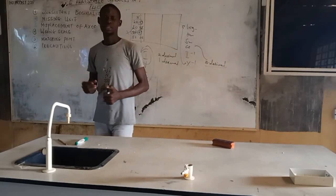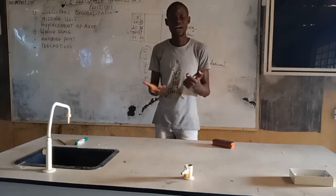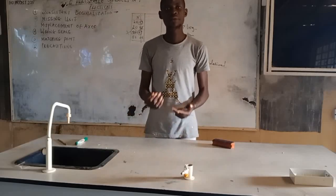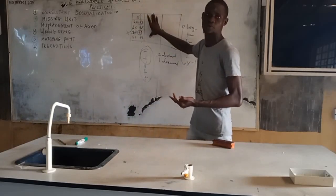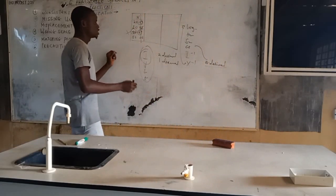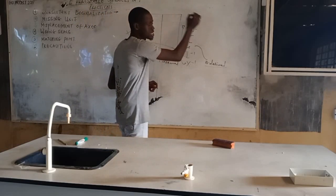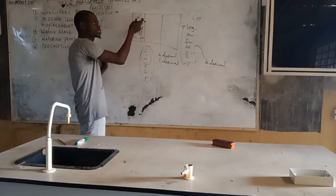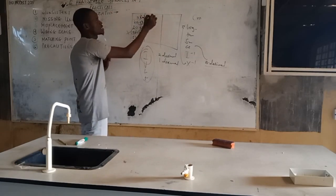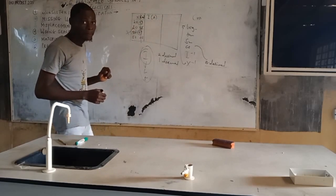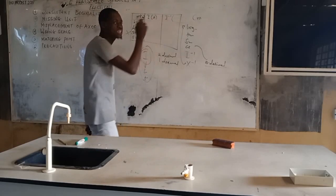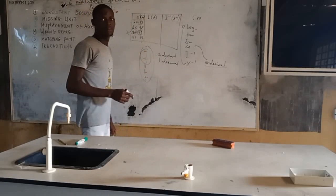Number two is missing units. A lot of students make this error, maybe because they are rushing to finish. One of the major things the examiner looks at in your table of observation is your unit. If you are measuring length, the unit is normally in cm. If you are measuring current, the unit should be Ampere. If you are measuring something reciprocal, like current inverse, you should indicate the unit as Ampere inverse.